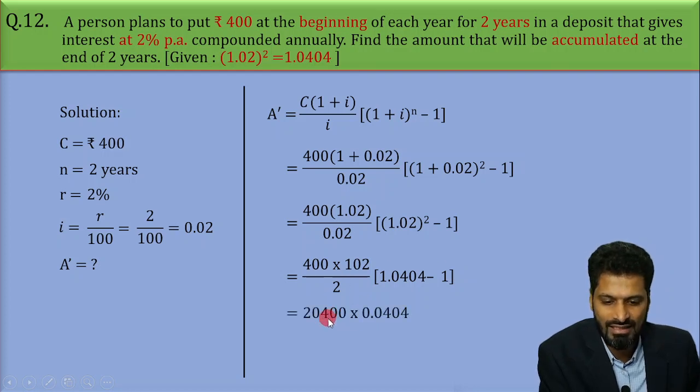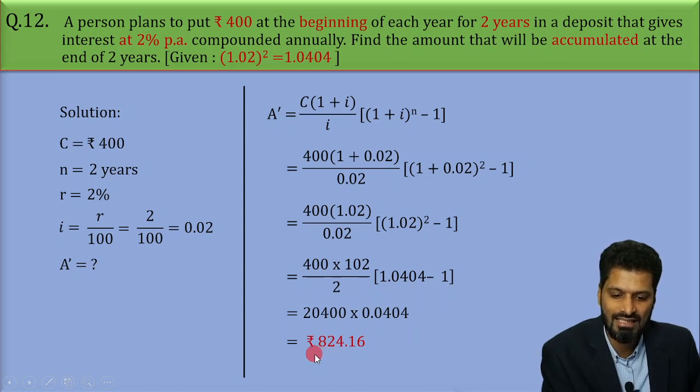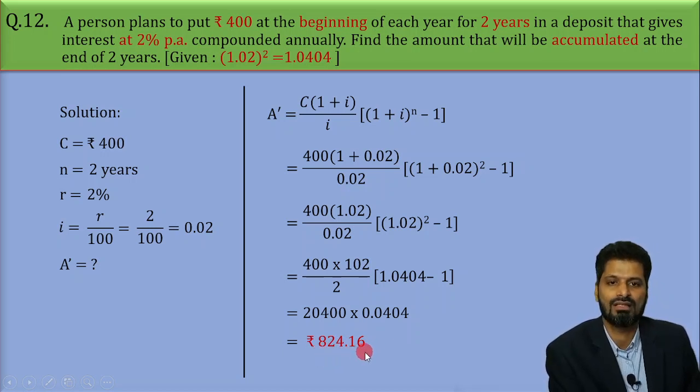Simplifying this further we get 20400 multiplied by 0.0404 which eventually gives us the value of A dash as rupees 824.16.